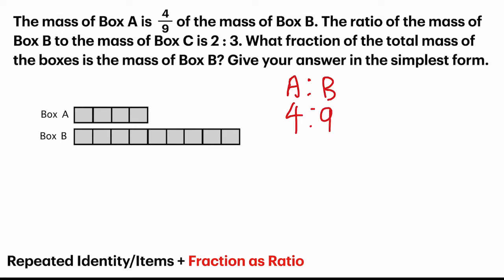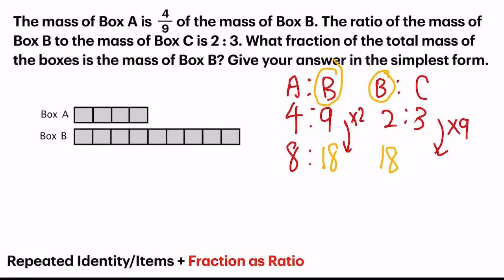Now the second ratio that they gave us, the mass of box B to C is 2 is to 3. Now here is the same thing, because the repeated identity is B, and we have 9 and 2. So the common multiple will be 18. We're going to change it to 18. So the first one, we have to multiply by 2. So 4 times 2, I get 8. And the next one, I have to multiply by 9. 2 times 9, 18. 3 times 9, 27.